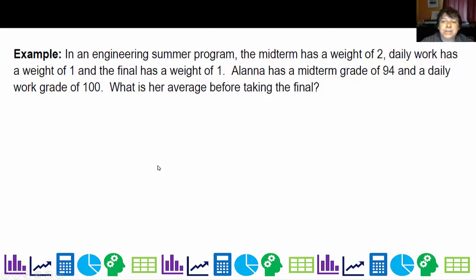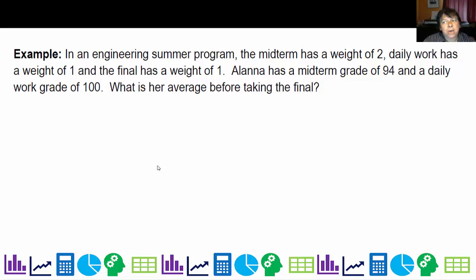I also teach in an engineering summer program for high school students. There, the midterm has a weight of 2, daily work has a weight of 1, and the final has a weight of 1. These are not listed as percentages. I could convert them to percentages if I wanted to, but I can also work with them as these kinds of weights. There's no law that they have to add up to 1 or 100, as long as the weights are consistent.